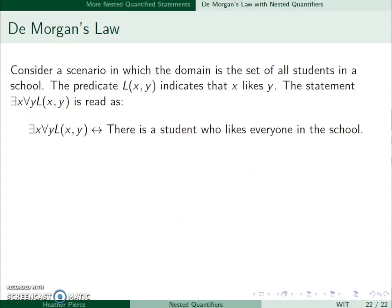So let's consider a scenario in which the domain is set to all students in a school. L(x,y) will indicate that x likes y. So we have this statement: ∃x∀y L(x,y). So in English, there is a student who likes everyone in the school. The negation: there is not a student who likes everyone in the school.